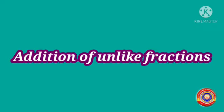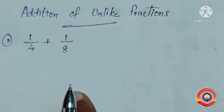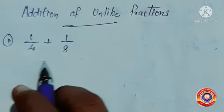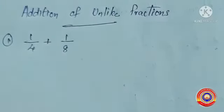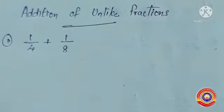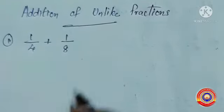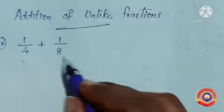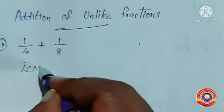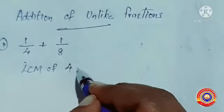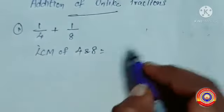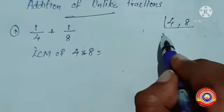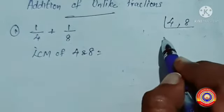Next, addition of unlike fractions. First question: 1 by 4 plus 1 by 8. 1 by 4 and 1 by 8 are unlike fractions. We cannot add fractions unless they are like fractions. So for converting them into like fractions, first of all we have to find the LCM of the denominators 4 and 8.